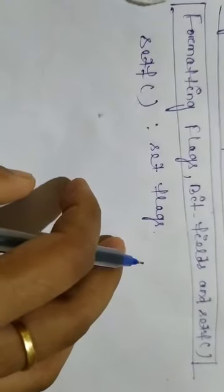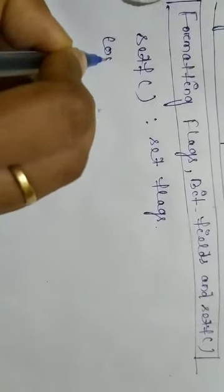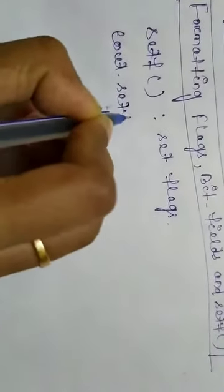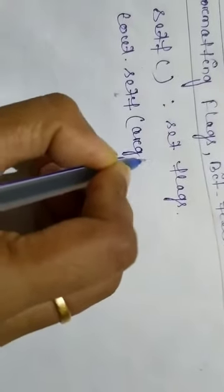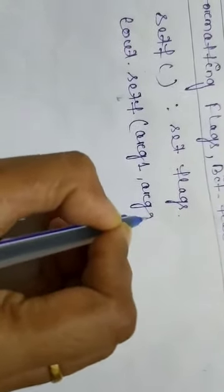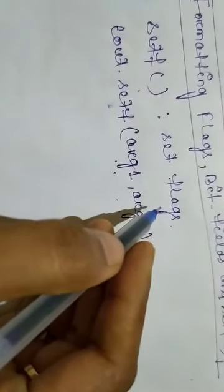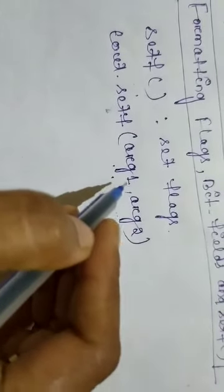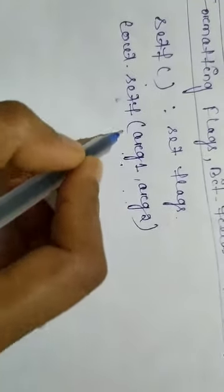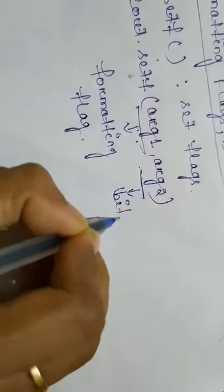The syntax is: cout.setf(), and this function takes two arguments — argument one and argument two. Both arguments are predefined. The setf function is a member function of the ios class. Argument one is one of the formatting flags defined in the ios class — it is a formatting flag. Argument two is known as the bit field.